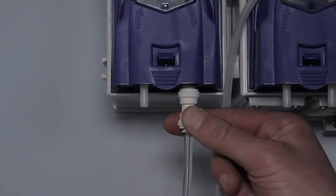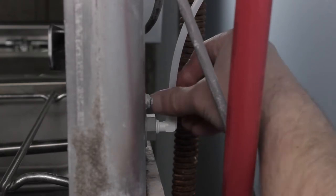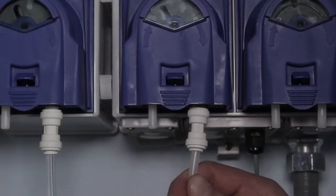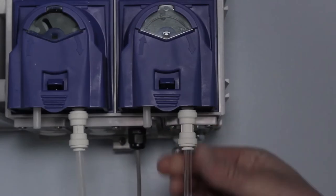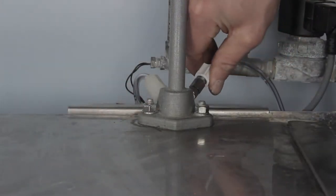Connect the detergent pump tubing into the fitting located at the back of the dishwasher. This will add product directly into the wash tank. Then we're going to connect the rinse and sanitizer from the outlet of the pump into the correct fittings on top of the machine. These products are added in the final rinse step.